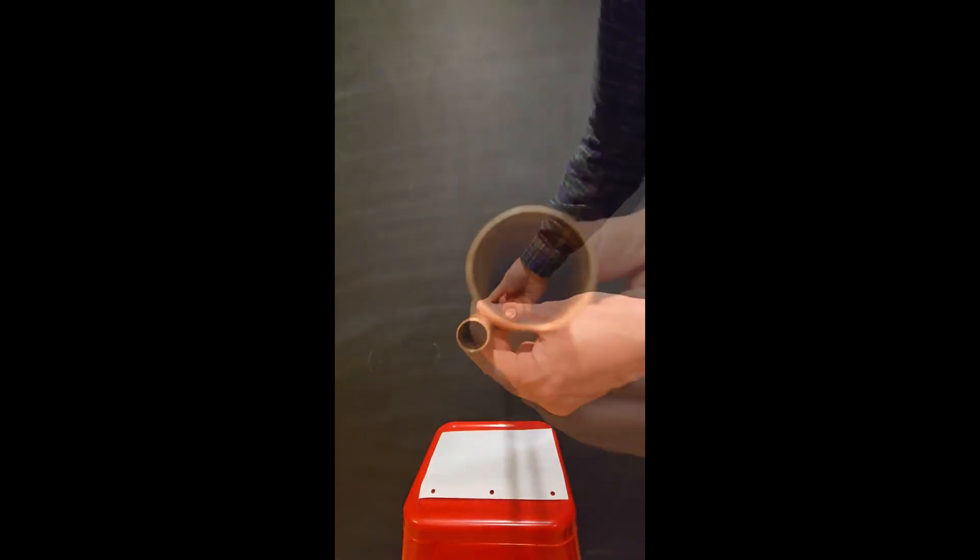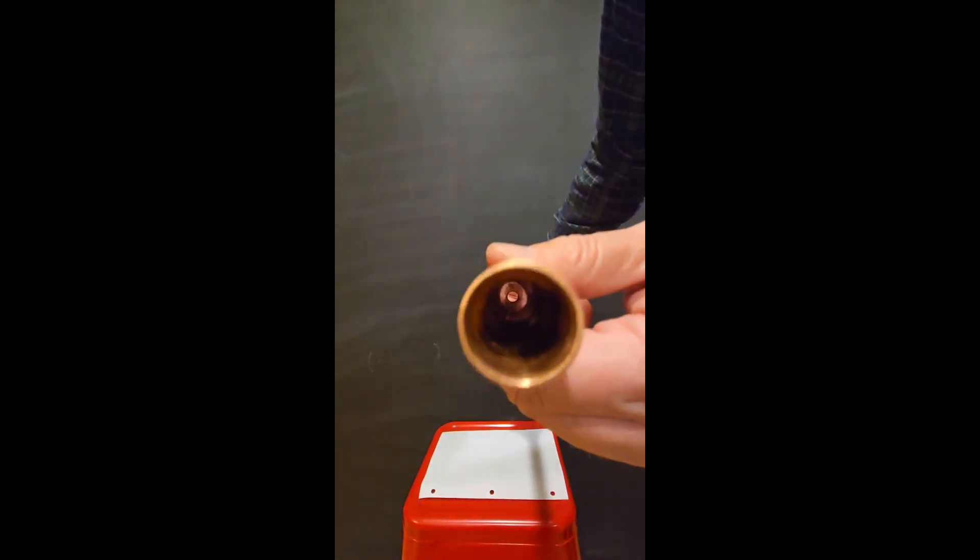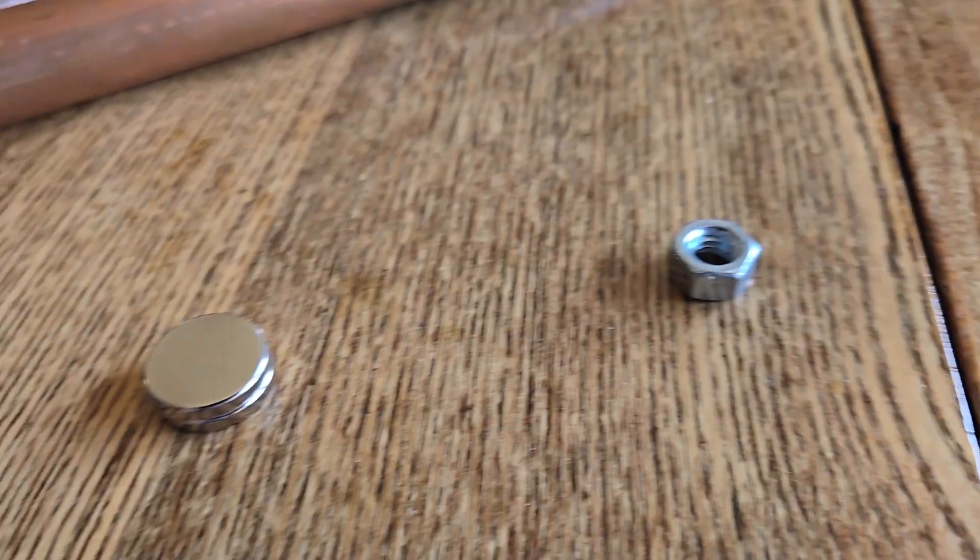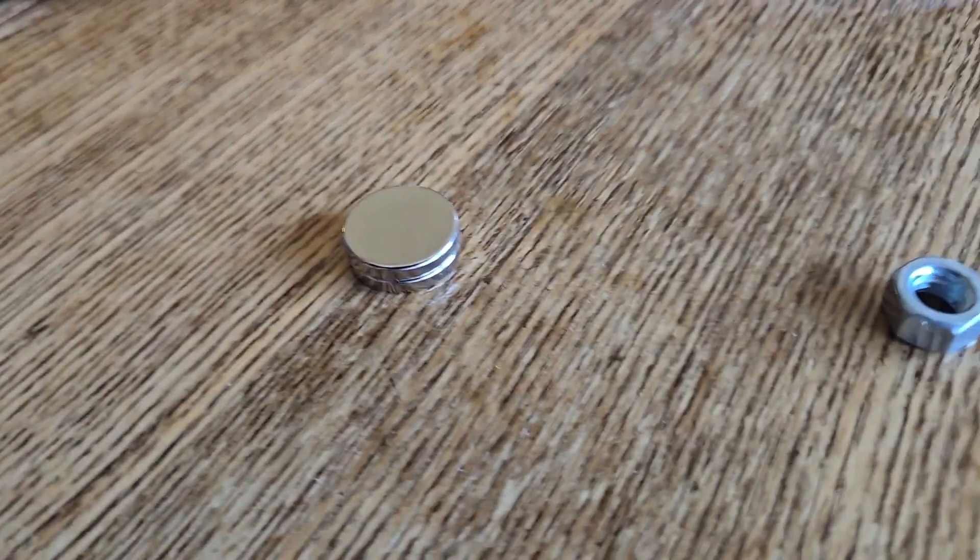I'm using a copper pipe that's three quarters of an inch in diameter and about a foot and a half long. Pretty much any metal nut or washer will work for your control experiment.